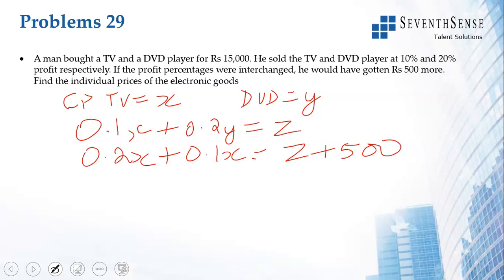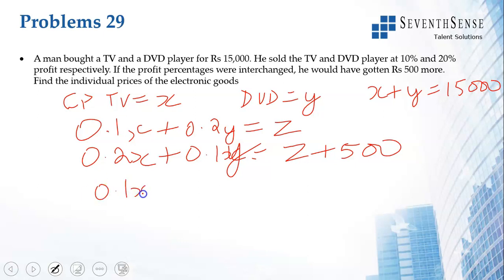From the subtraction, 0.1x − 0.1y = 500. Multiplying through by 10 gives x − y = 5,000. We also know x + y = 15,000. These are our two simultaneous equations.